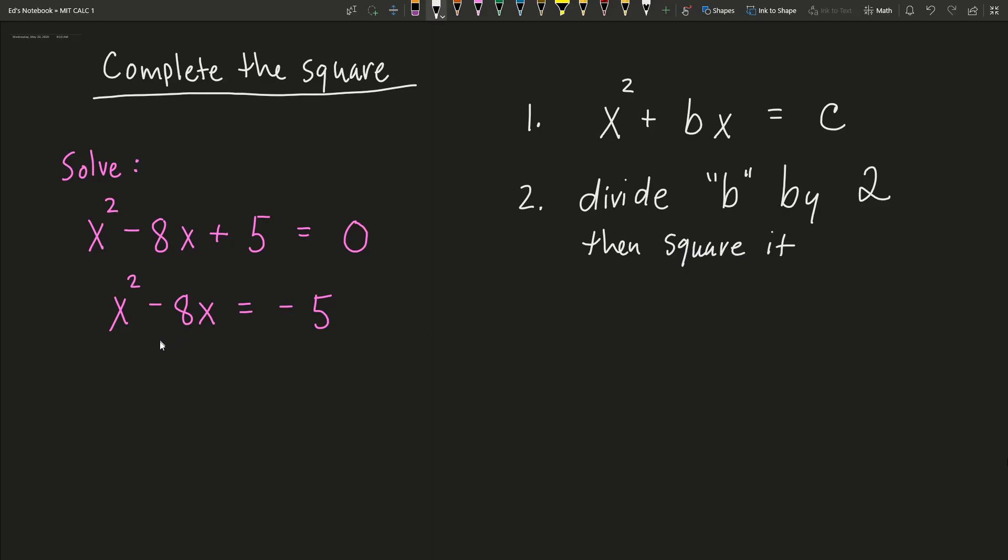So what is my b value? My b value is -8. So maybe I'll put this over on the side. So -8 divided by 2 is equal to -4. And then I need to square the whole thing. So that's going to be equal to 16. Let me just make that a little bit smaller so that it doesn't get in the way of my steps here.